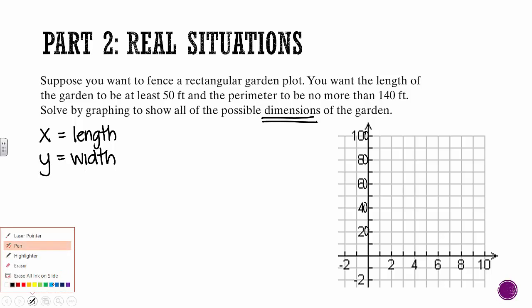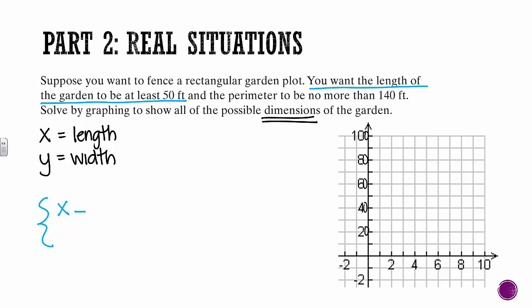So then we're going to write our two equations. So the first one, you want the length to be at least 50 feet. So since length was x, we want x to be at least 50. So that means we would be happy with exactly 50 or anything bigger than that. So we want x to be greater than or equal to 50.